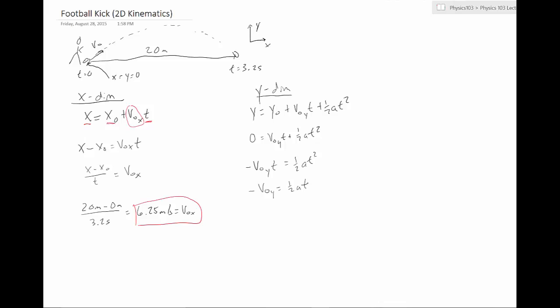All right. That's looking much nicer. Or the other way I put that is v zero y is equal to negative one half a t.